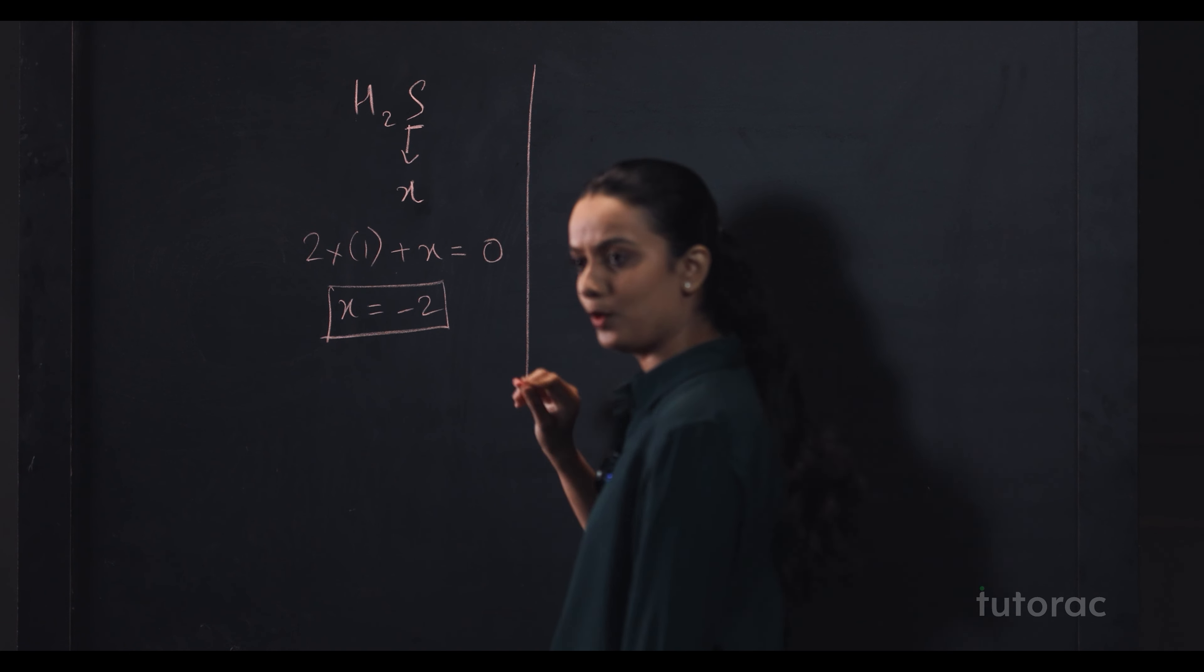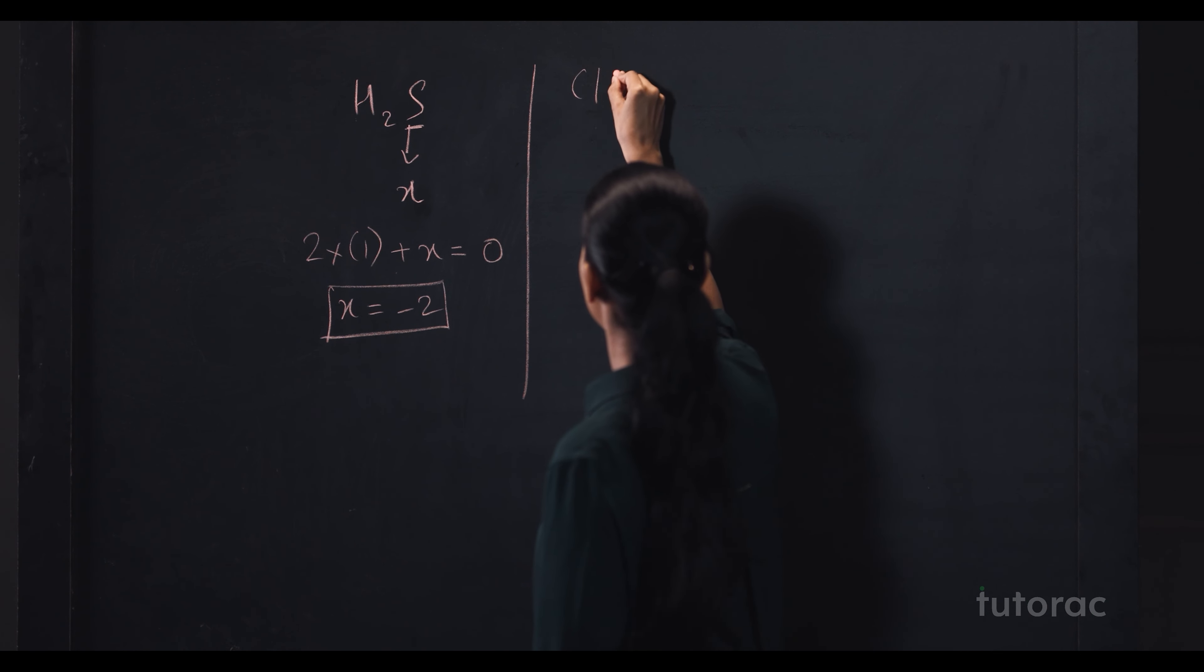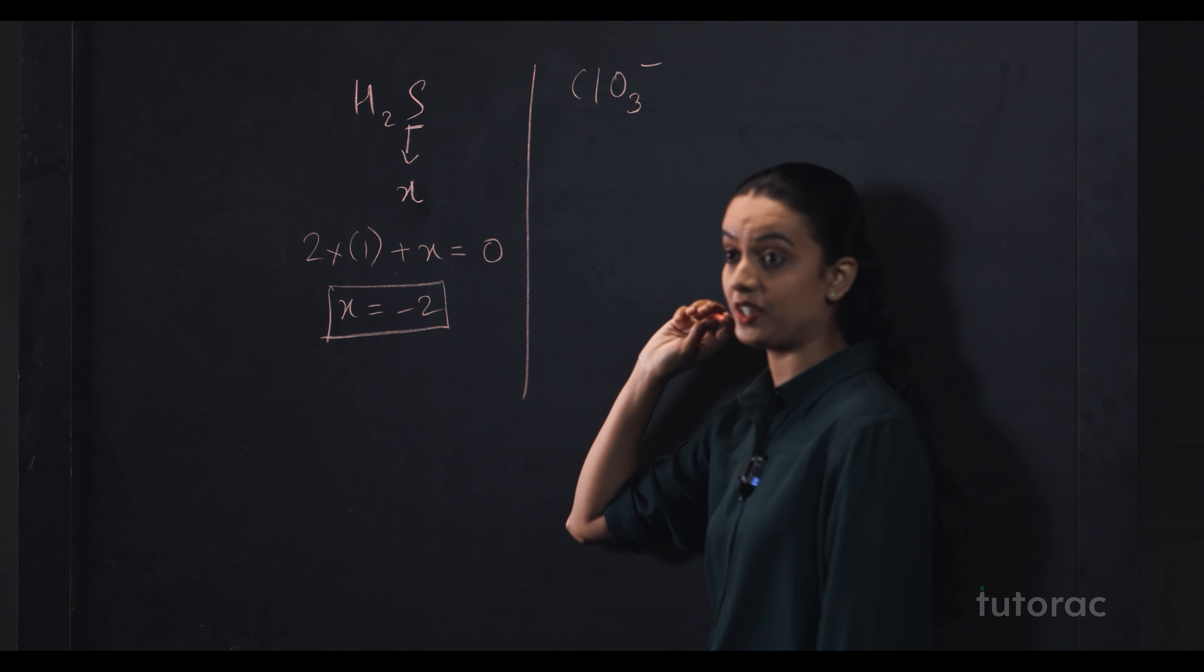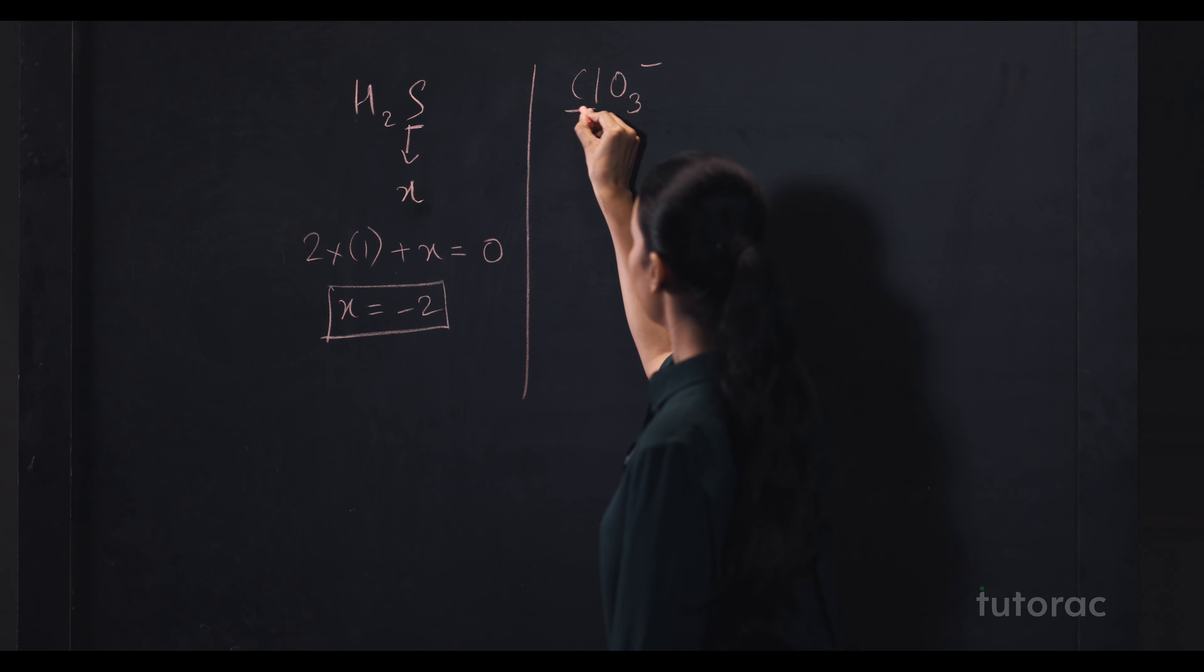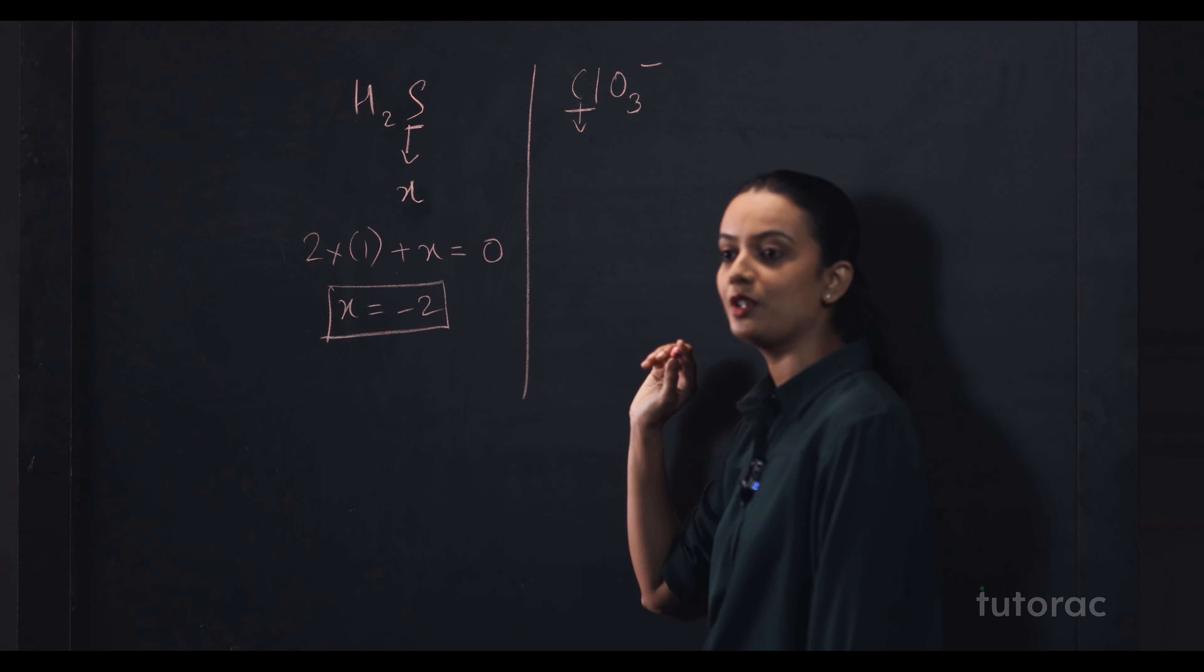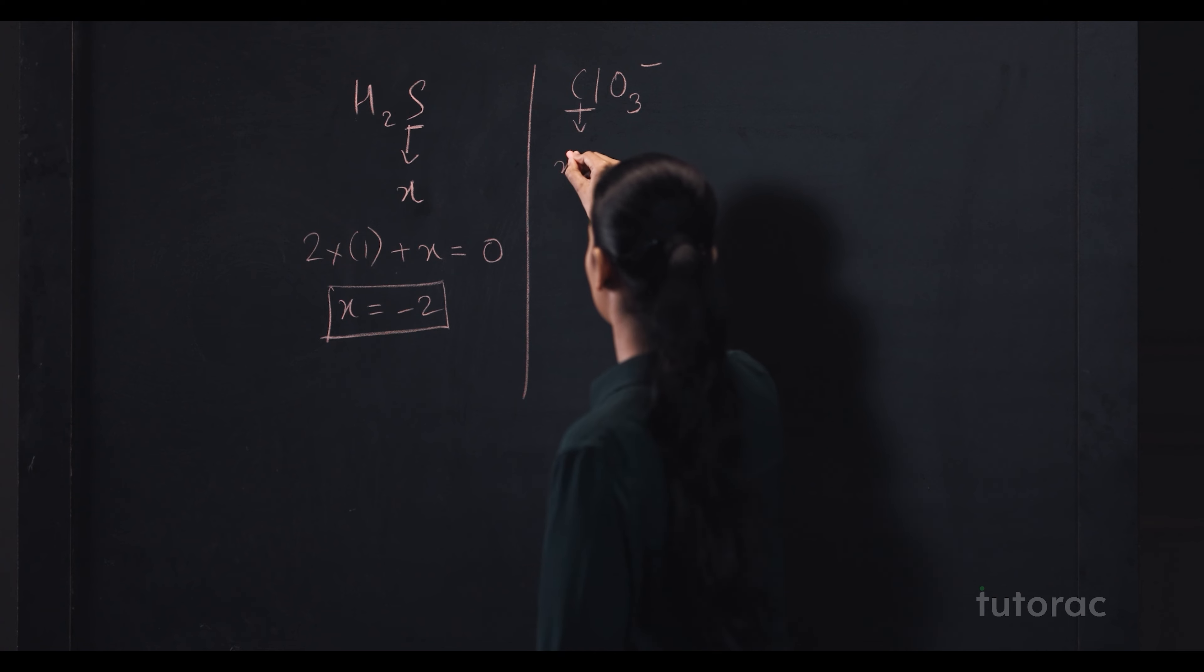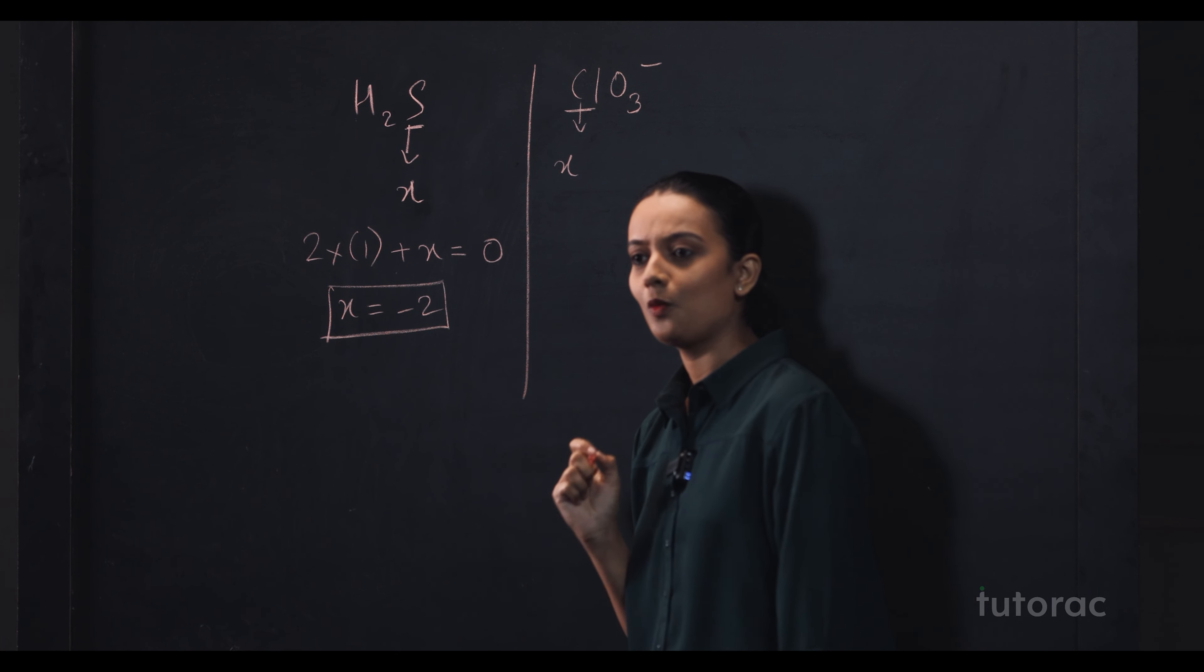I will take one more example like ClO3 minus, this is a charged species, right? You have to calculate oxidation number of chlorine in this compound. Take it as X.